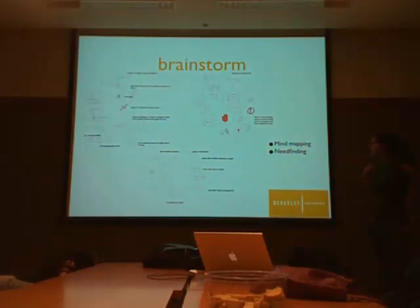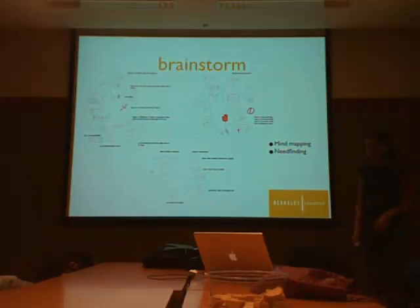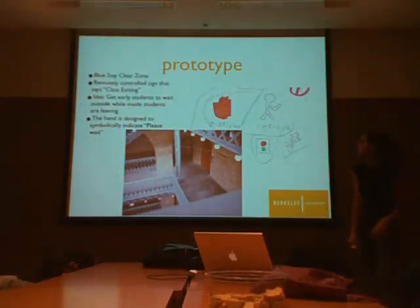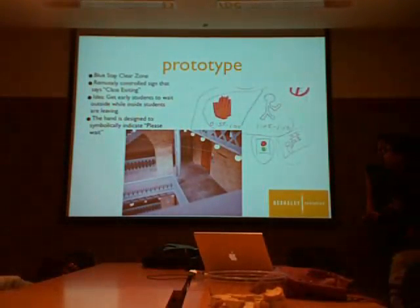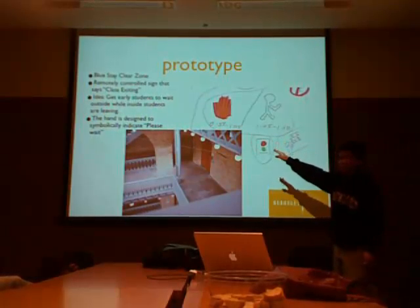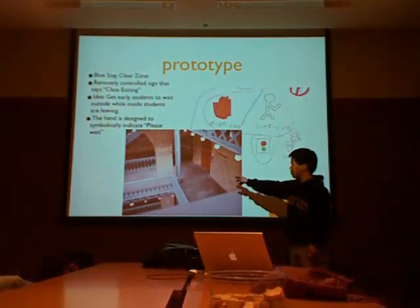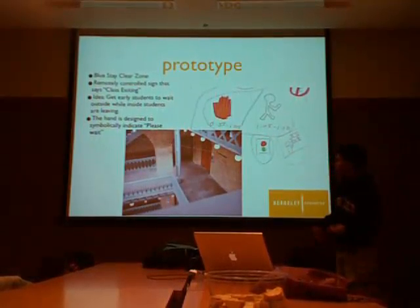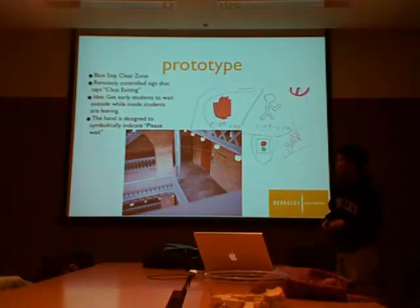For brainstorming, we did mind mapping and found these — some examples of what we did. One of the ideas we tried before was a blue tape zone. What we're showing here is we mapped out the blue tape — a pair of tape — indicating the area people shouldn't stand in. Unfortunately, this did not work because people just walked right over it, and in the process blocked themselves from being able to see it.